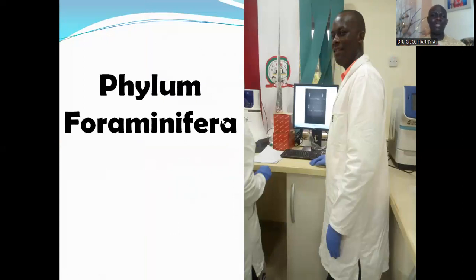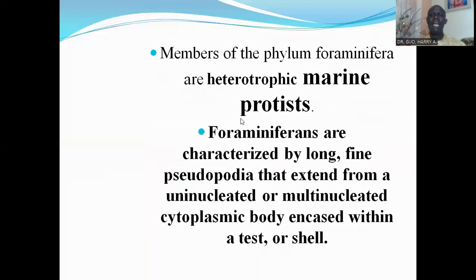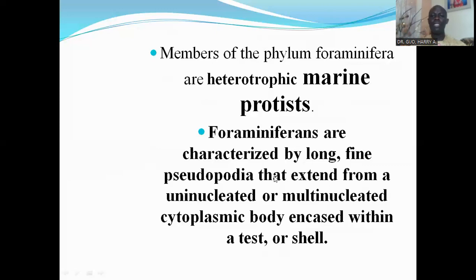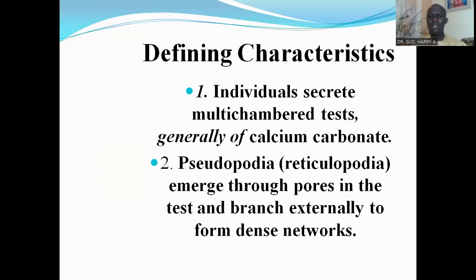Now let us look at the phylum Foraminifera among the amoeboid protozoans. Members of the phylum Foraminifera are heterotrophic marine protozoans, found in the sea and unable to carry out photosynthesis. Foraminifera are characterized by long, fine pseudopodia that extend from a uninucleated or multinucleated cytoplasmic body encased within a test or shell. Let us look at the defining characteristics of the foraminifera.